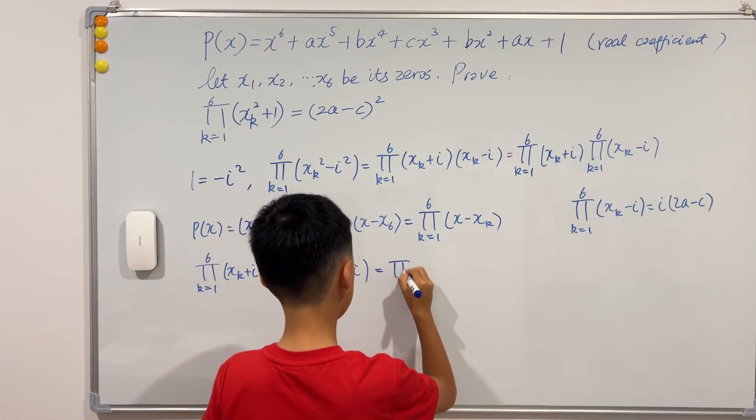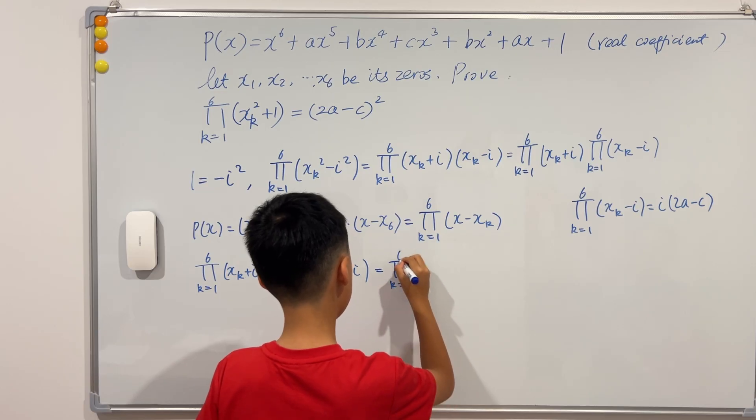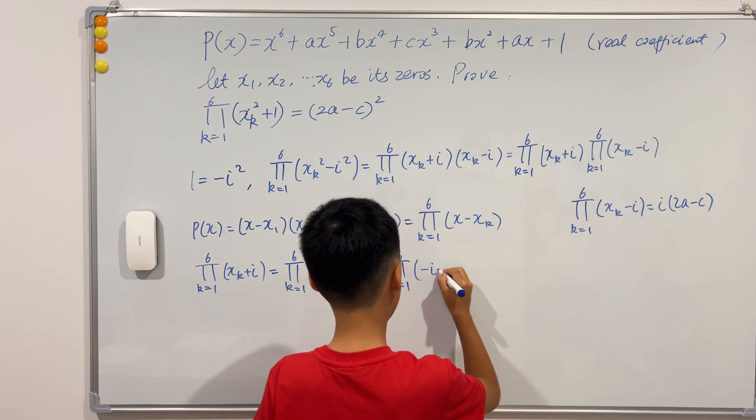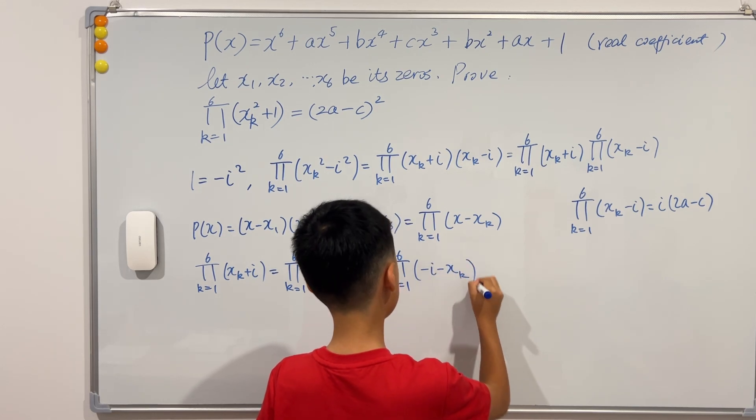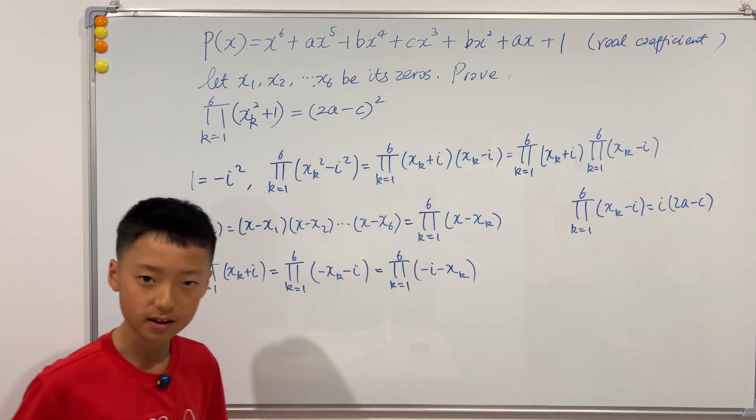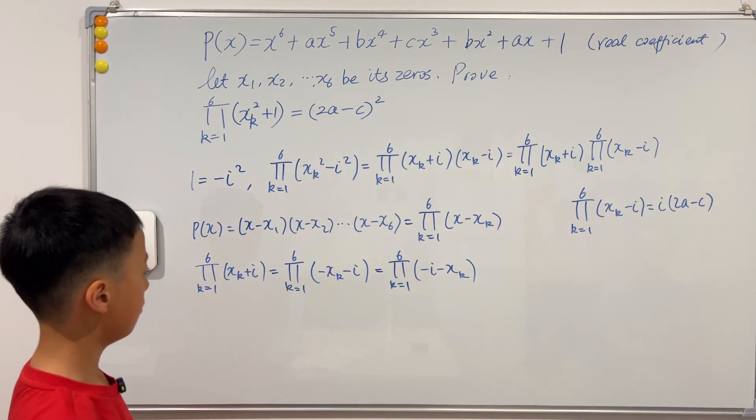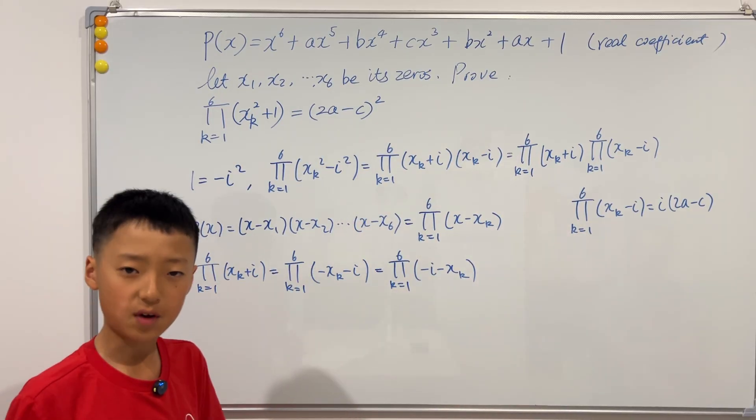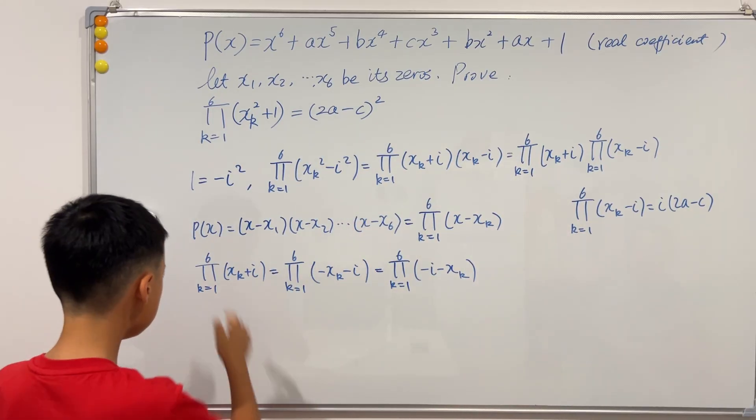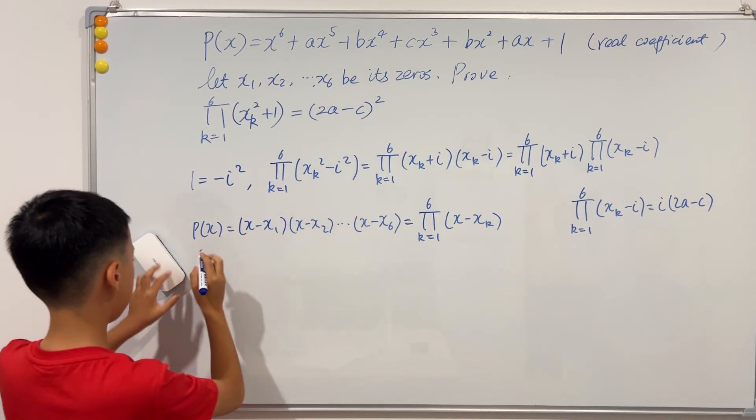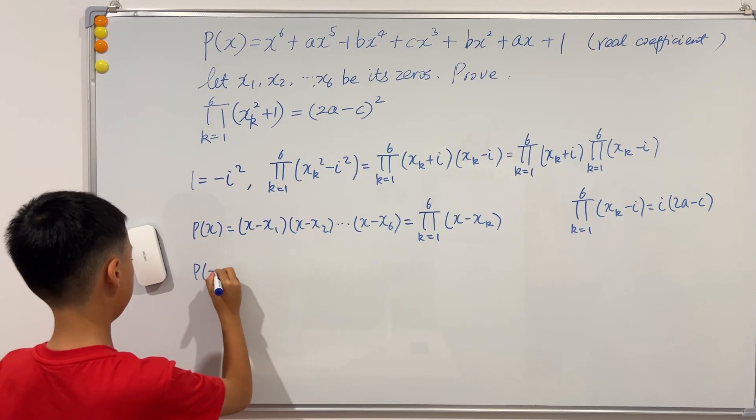So we keep the capital pi, but if we just swap these two terms around, negative i minus x to the power x_k, then we see that x should be negative i, right? So isn't this just P negative i? Yes it is. So all we have to do is we have to figure out P of negative i.